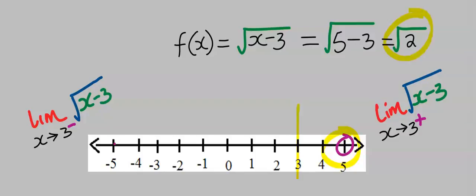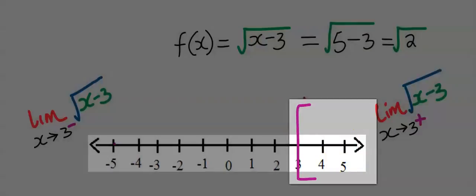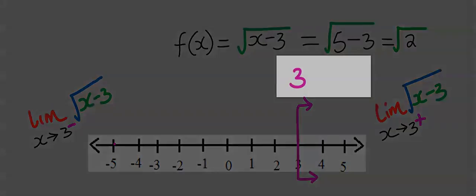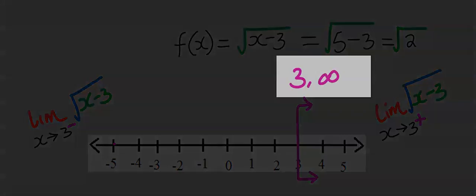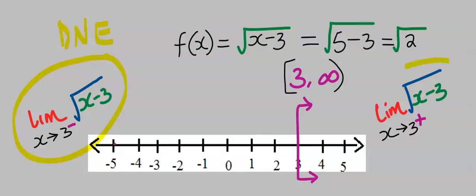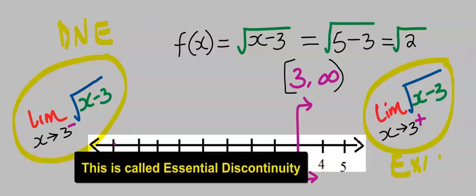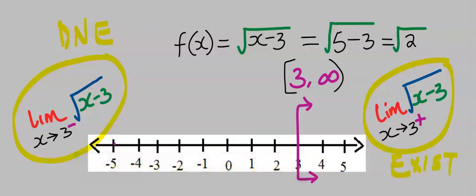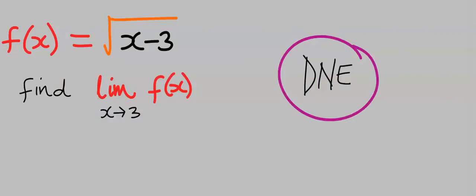Square root of 2 will give us a real answer. Hence, the domain is closed towards only the right direction, going towards infinity. It is closed at 3, inclusive, and continues towards infinity. Hence, the left-hand limit does not exist. But the right-hand limit does exist. And since both are not equal, we conclude that this limit does not exist.